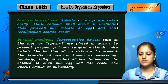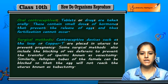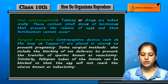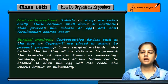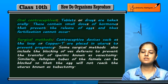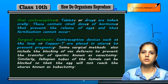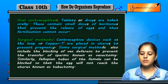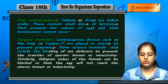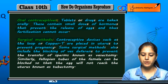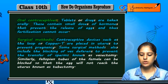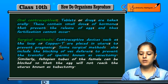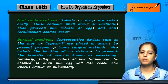Next are surgical methods. Contraceptive devices such as the loop or copper-T are placed in the uterus to prevent pregnancy. In males, the transfer of sperm can be prevented through a surgical procedure known as vasectomy.